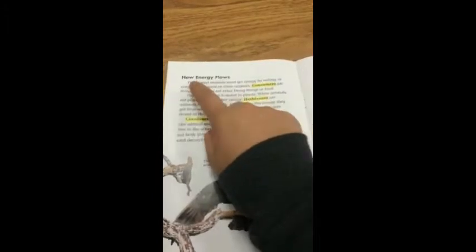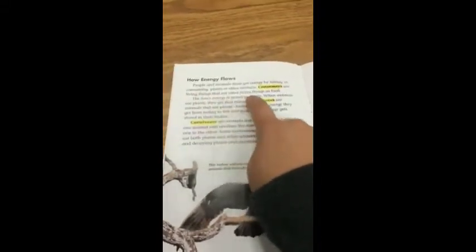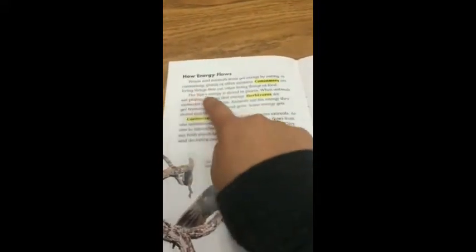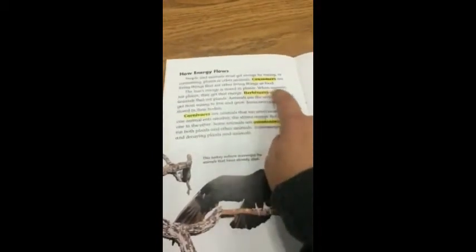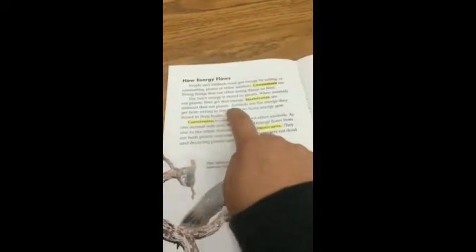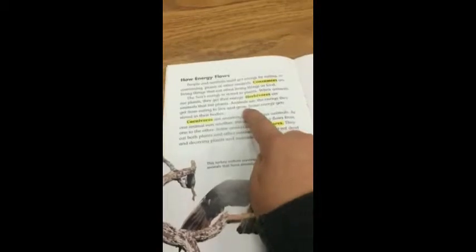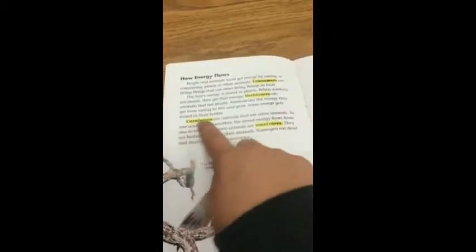How Energy Flows. People and animals must get energy by eating or consuming plants or other animals. Consumers are living things that eat other living things as food. The sun's energy is stored in plants. When animals eat plants, they get that energy. Herbivores are animals that eat plants. Animals use the energy they get from eating to live and grow. Some energy gets stored in their bodies.